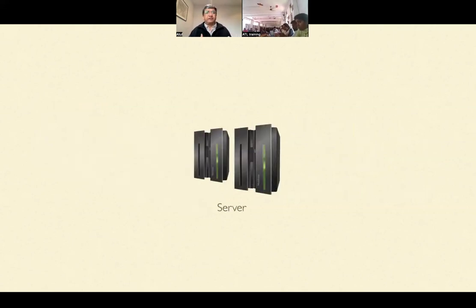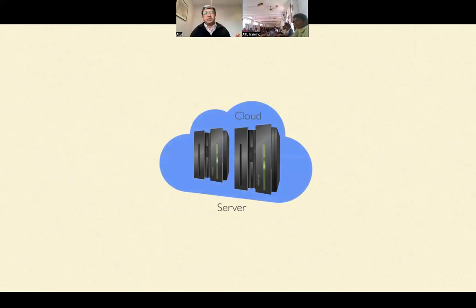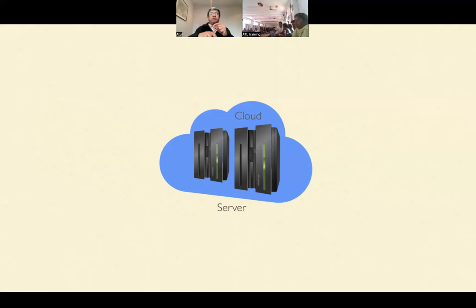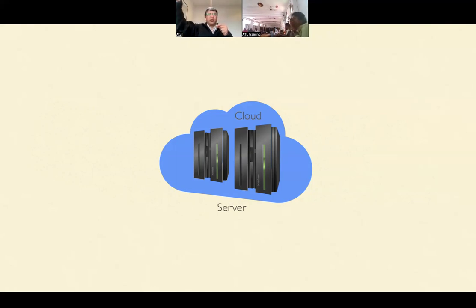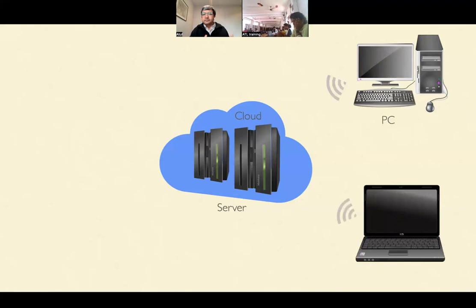When we talk about AI and ML — artificial intelligence and machine learning — normally we are talking about very big machine learning models. These models reside on servers or server farms because they need a lot of computing power, and that's what we call the cloud. For example, when we were using Google Teachable Machine, the machine learning model was residing in the cloud.